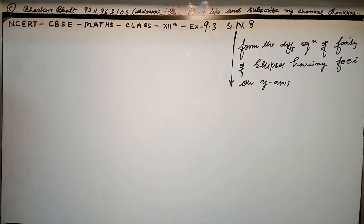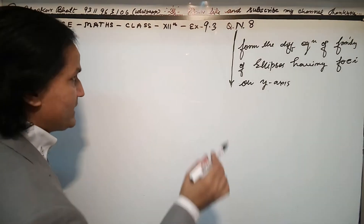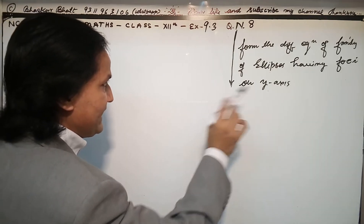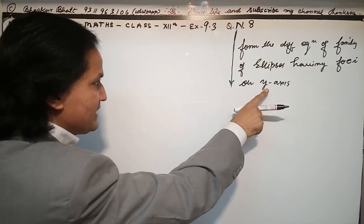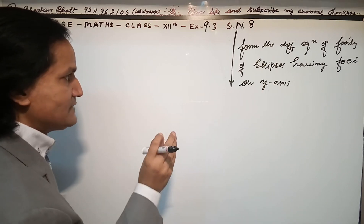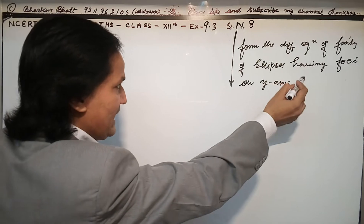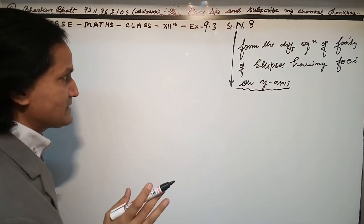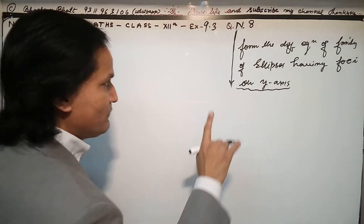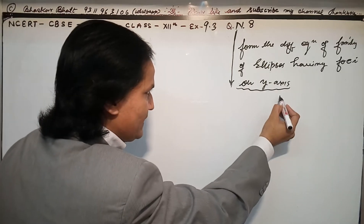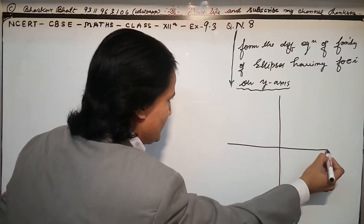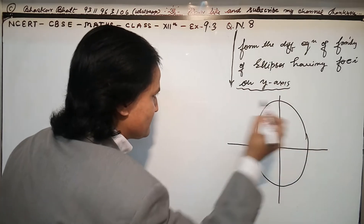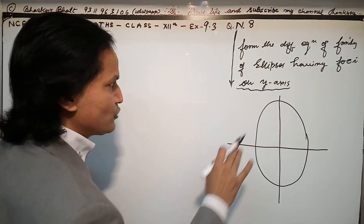We are starting question number 8, exercise 9.3 — finding the differential equation of the family of ellipses having foci on the y-axis. This is the biggest critical information we have in this question. If the foci are on the y-axis, then we have a vertical ellipse.